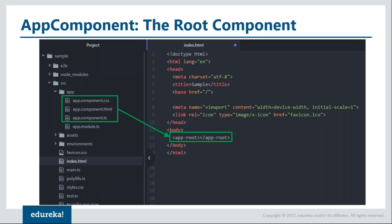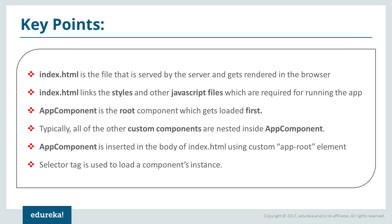Here are the key points: First, index.html is the file that is served by the server and gets rendered in the browser. Second, index.html links the styles and other JavaScript files required for running the application. Third, app component is the root component which gets loaded first. Fourth, all other custom components are nested inside app component. App component is inserted into the body of index.html using the custom app-root element. A selector tag is used to load a component's instance wherever it is required.